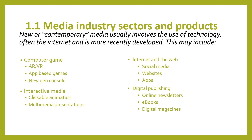Web-based products include websites and apps that use the web for distribution. Social media is probably the biggest product type in the internet sector — Instagram, Facebook, Twitter, Snapchat. Digital publishing includes ebooks, Amazon Kindles, and digitised magazines or online newspapers, such as the Sun or Guardian apps.